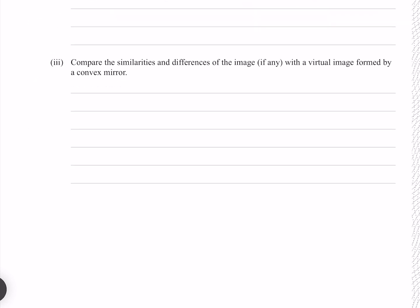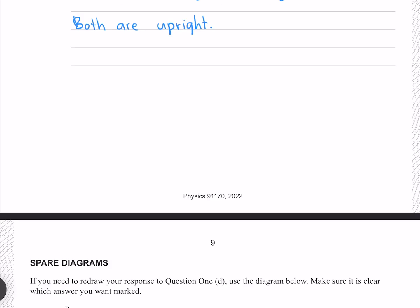Compare the similarities and differences of the image, if any, with a virtual image formed by a convex mirror. The convex image is diminished, whereas the concave image is enlarged. Both are upright. And we're done.